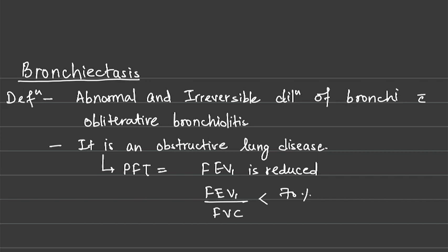We will discuss the topic of bronchiectasis. The definition is abnormal and irreversible dilatation of bronchi with obliterative bronchiolitis. Two words are important: one is abnormal dilatation and the second is irreversible dilatation of bronchi and terminal bronchioles.